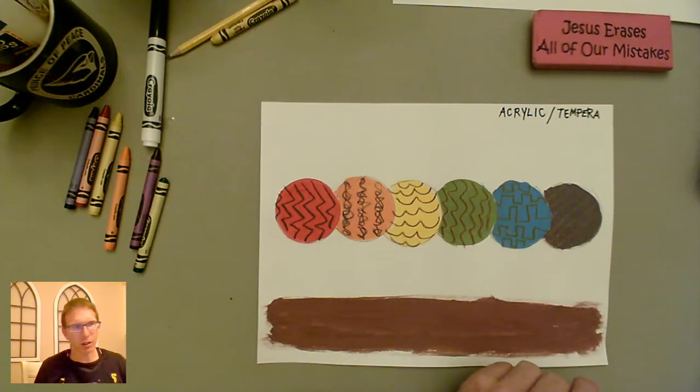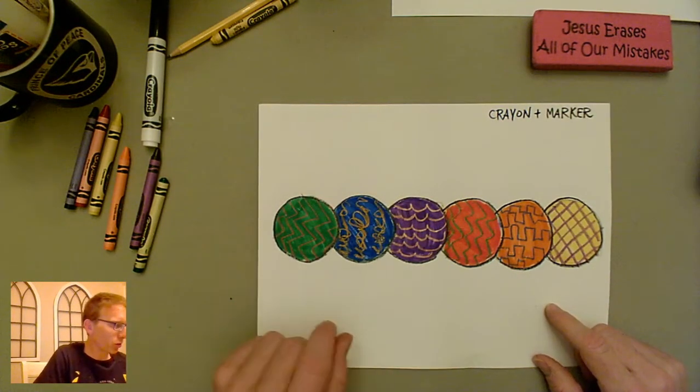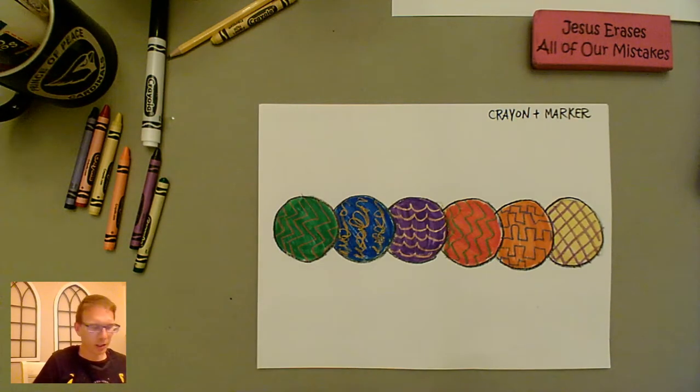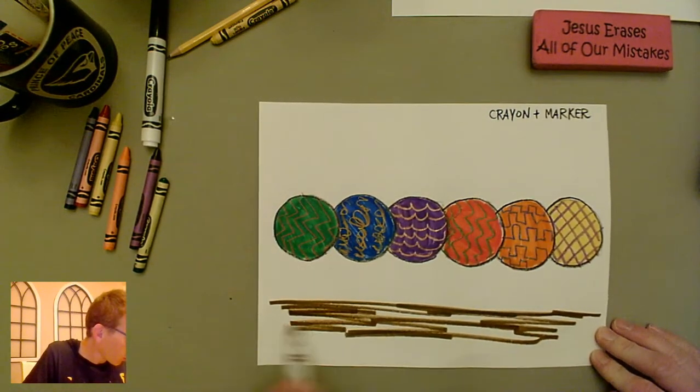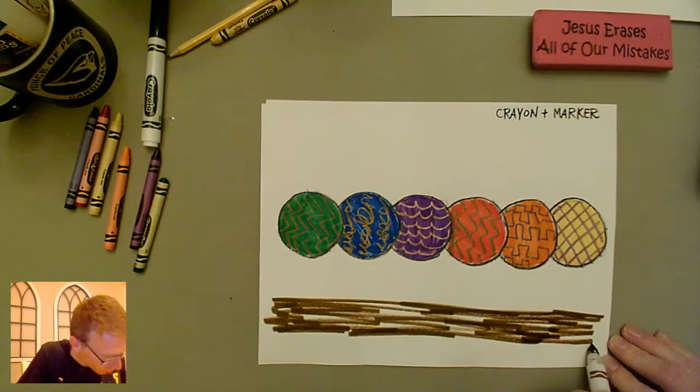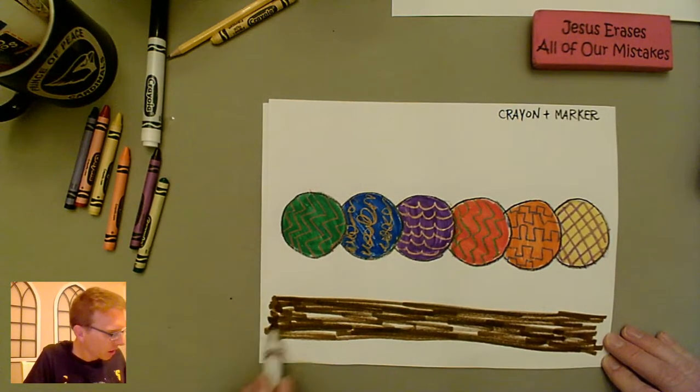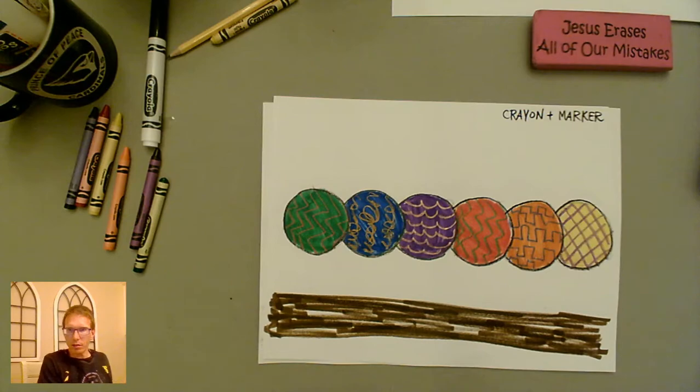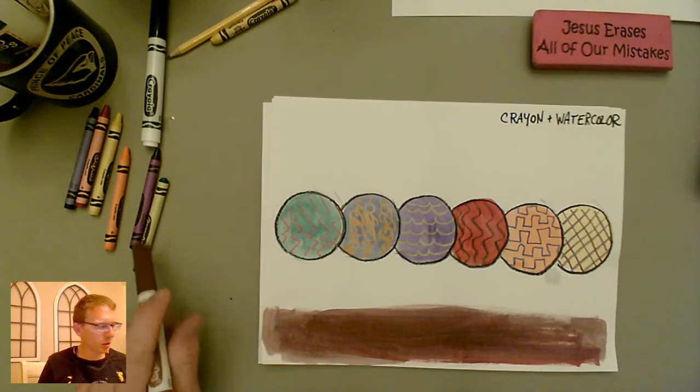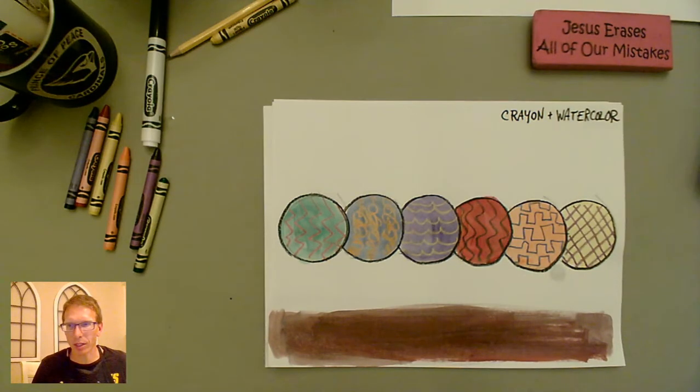Acrylic and tempera with crayon on top. Crayon and marker, which probably looks the coolest for what we're doing. Don't forget to grab a little brown and put a little dirt down here. Or if you want to think about it like a tree branch that the caterpillar is crawling on, we could do that too. So we'll talk about that next time. And then the last one is crayon and watercolor. So that finishes up part two. We're going to add a few details to finish these up and make them look like caterpillars instead of just a bunch of floating circles with a bunch of patterns on them. So check back next time for part three.